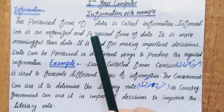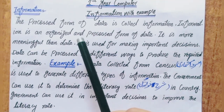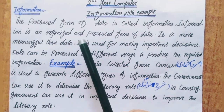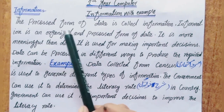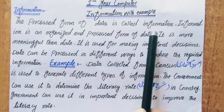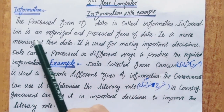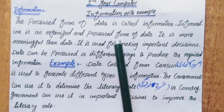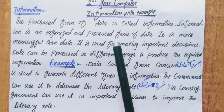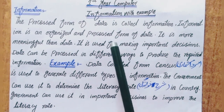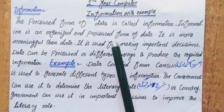What is information? Basically, information is a processed form of data. The processed form of data is called information. Information is an organized and processed form of data. When you organize the data and put it through a process with some steps, it is converted to information.